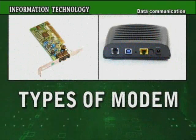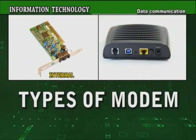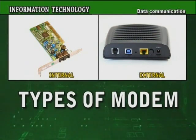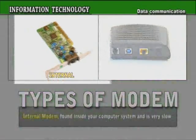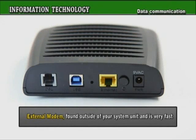Types of modem. There are two types of modem: internal and external. An internal modem is found inside your computer system and is very slow. An external modem is found outside of your system unit and is very fast.